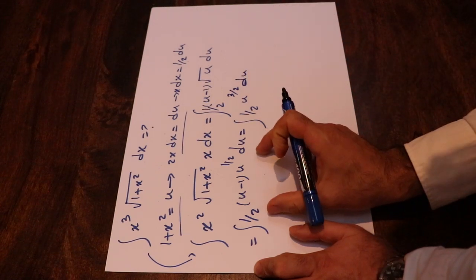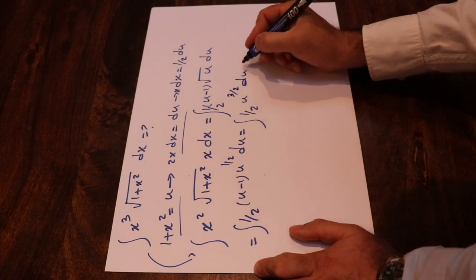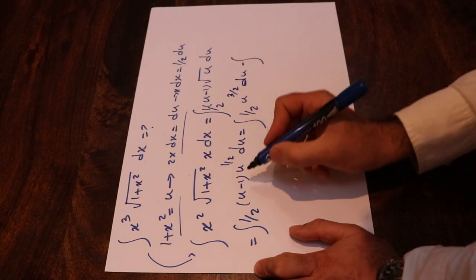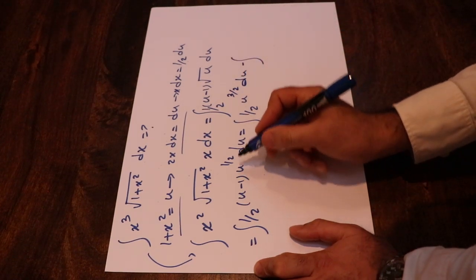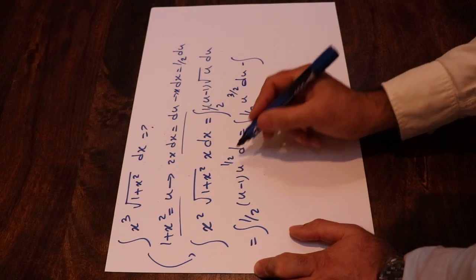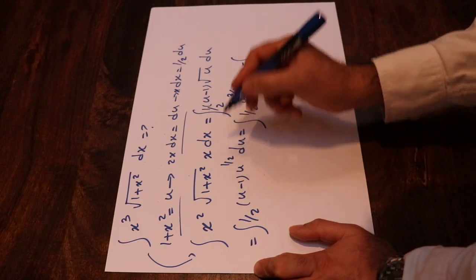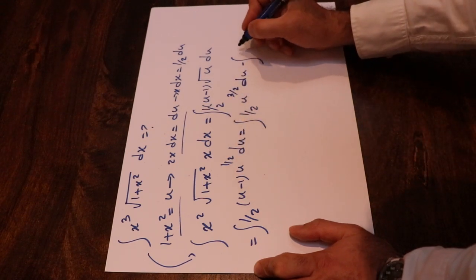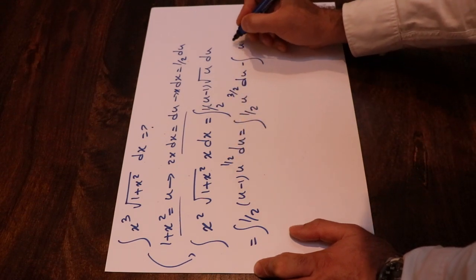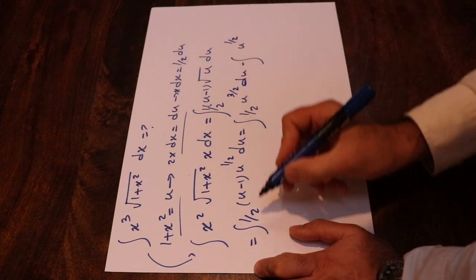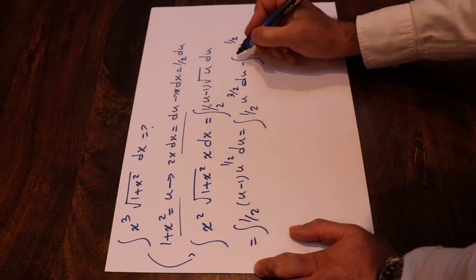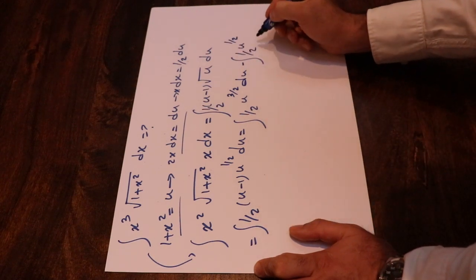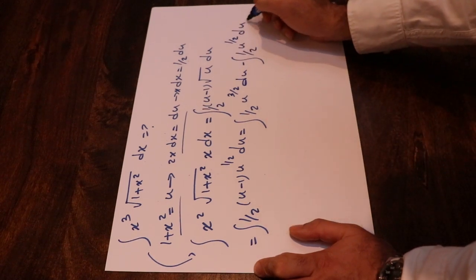I'm basically expanding this integral, minus the integral of 1 times u^(1/2), that will be equal to u^(1/2), with the coefficient (1/2) du.